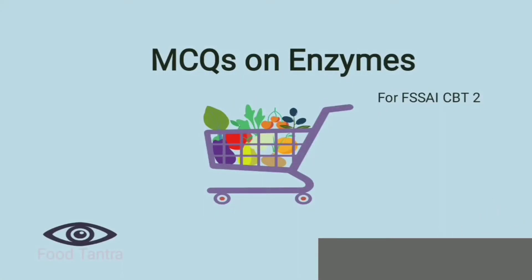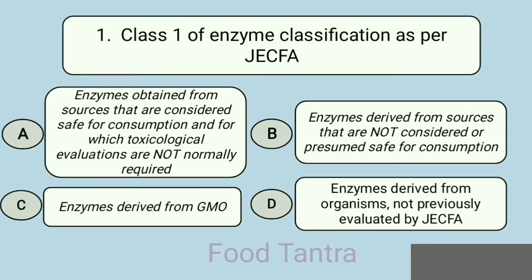Welcome to Food Tantrum multiple choice questions on enzymes as processing aids. Question 1: Class 1 of enzyme classification as per JECFA — enzymes obtained from sources that are considered safe for consumption and for which toxicological evaluations are not normally required. Option B: enzymes derived from GMO. Option C: enzymes derived from sources that are not considered presumed safe for consumption.